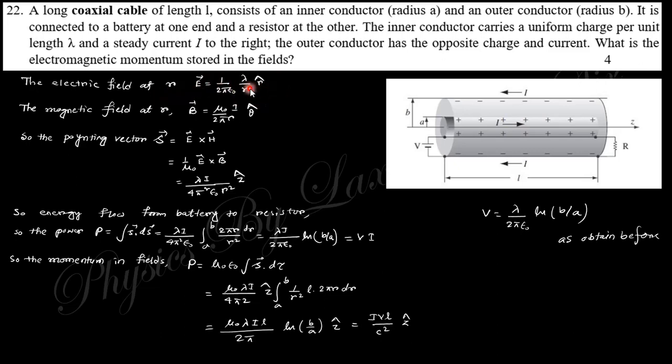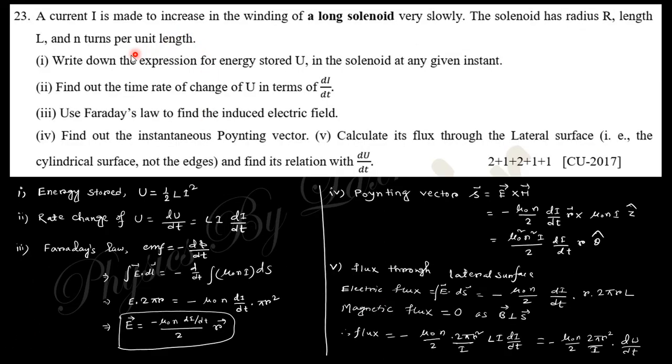What is the electromagnetic momentum stored in this field? The electric field at distance r is obtained as before, and this is the magnetic field. So the Poynting vector is like that, and the momentum of this field is μ₀ε₀ times the integration.